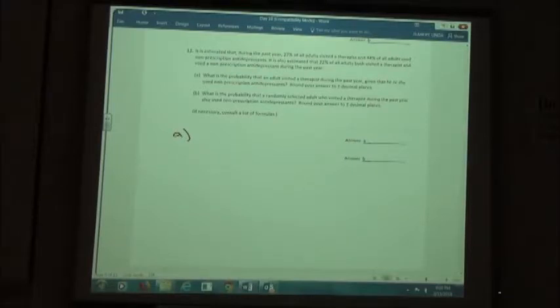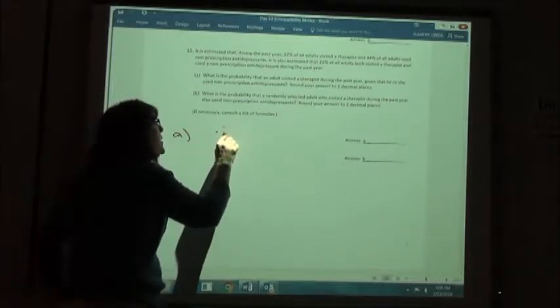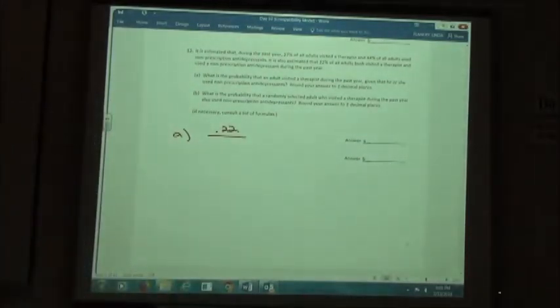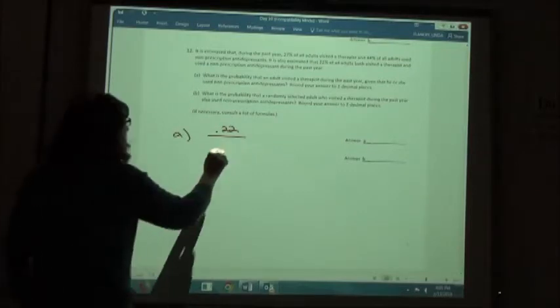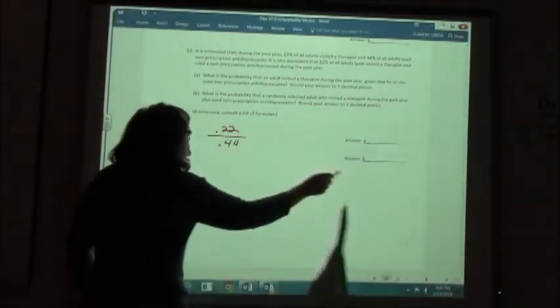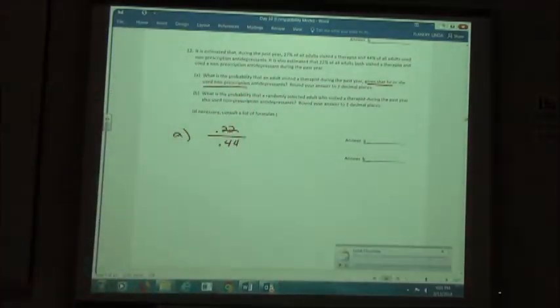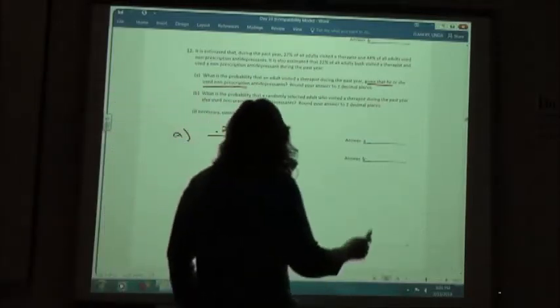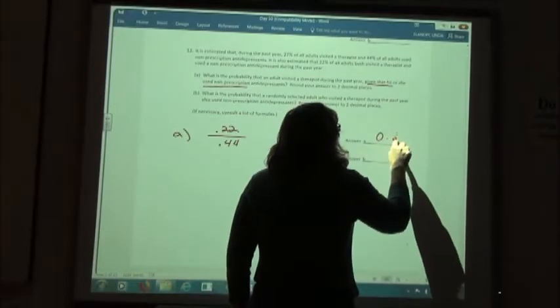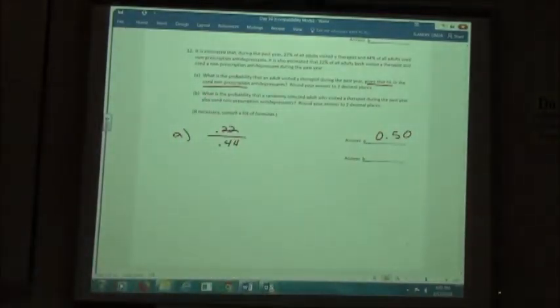So on the top of my fraction, I'm going to use 0.22, which is both. On the bottom of my fraction, I'm going to use 0.44, because it was given that they used non-prescription antidepressants, which was the 44%. I end up with 0.5. I'm going to put two decimal places, so I'm going to use 0.50.